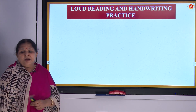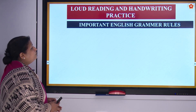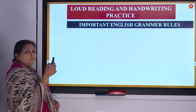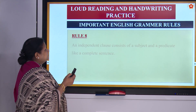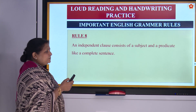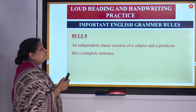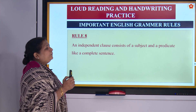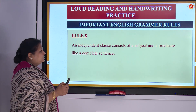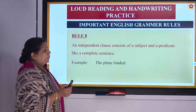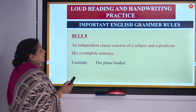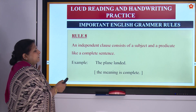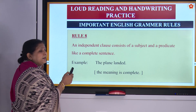Now we have loud reading and handwriting practice. Let us see what is there in store for us — important English grammar rules, which is a continuation from the last lesson. Rule number 8: An independent clause consists of a subject and a predicate, like a complete sentence — the meaning is complete. Example: 'The plane landed.'